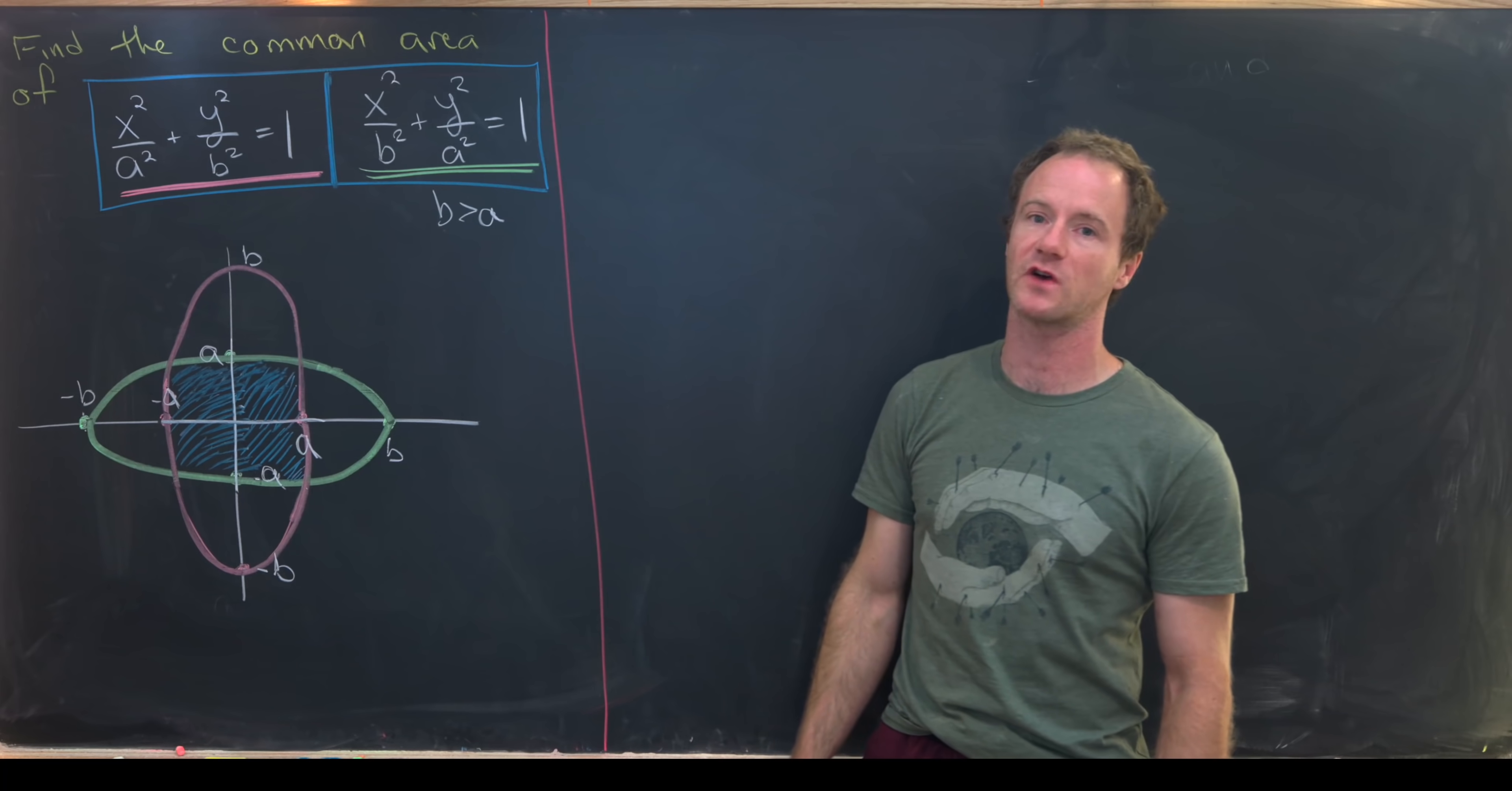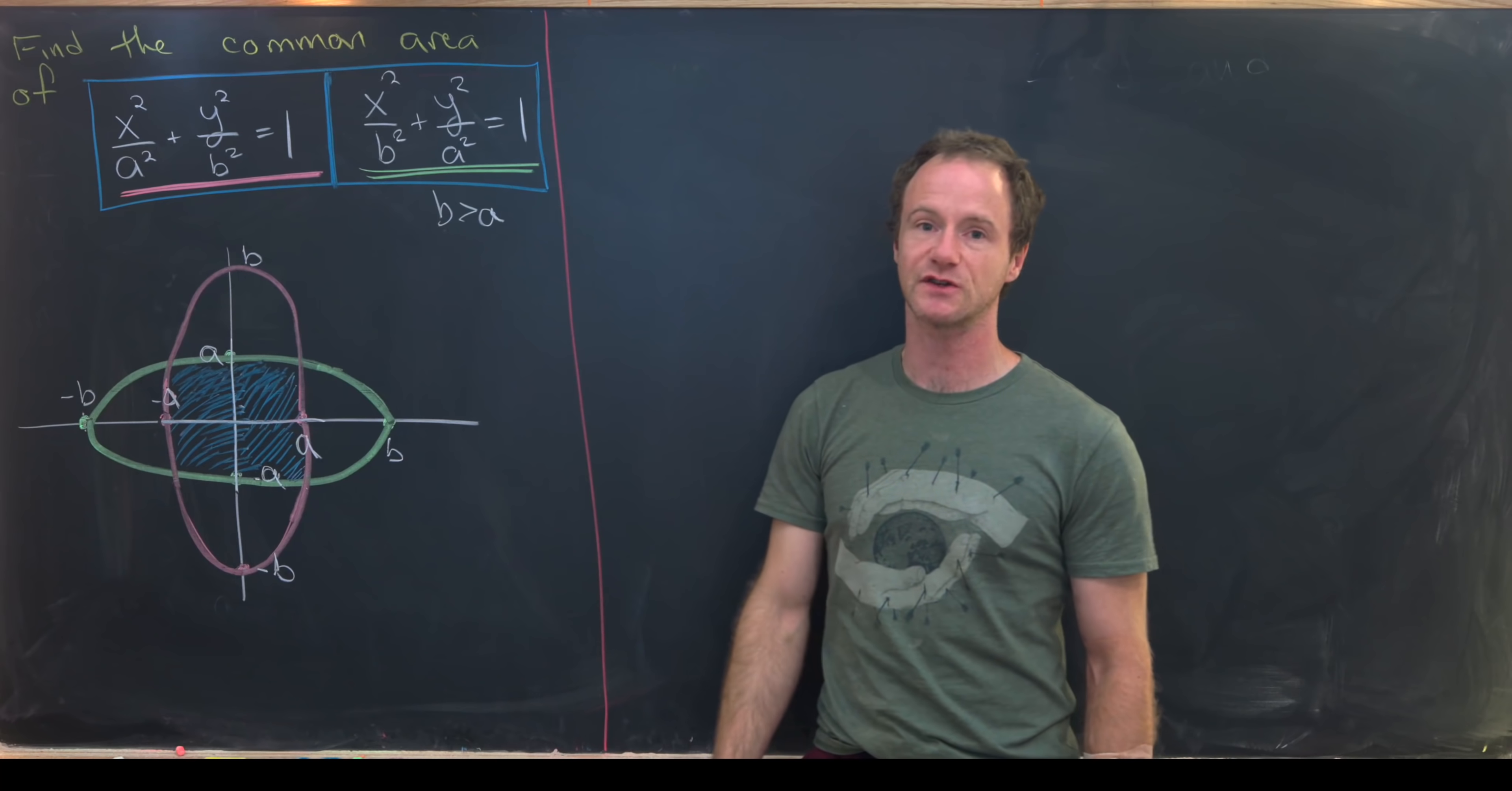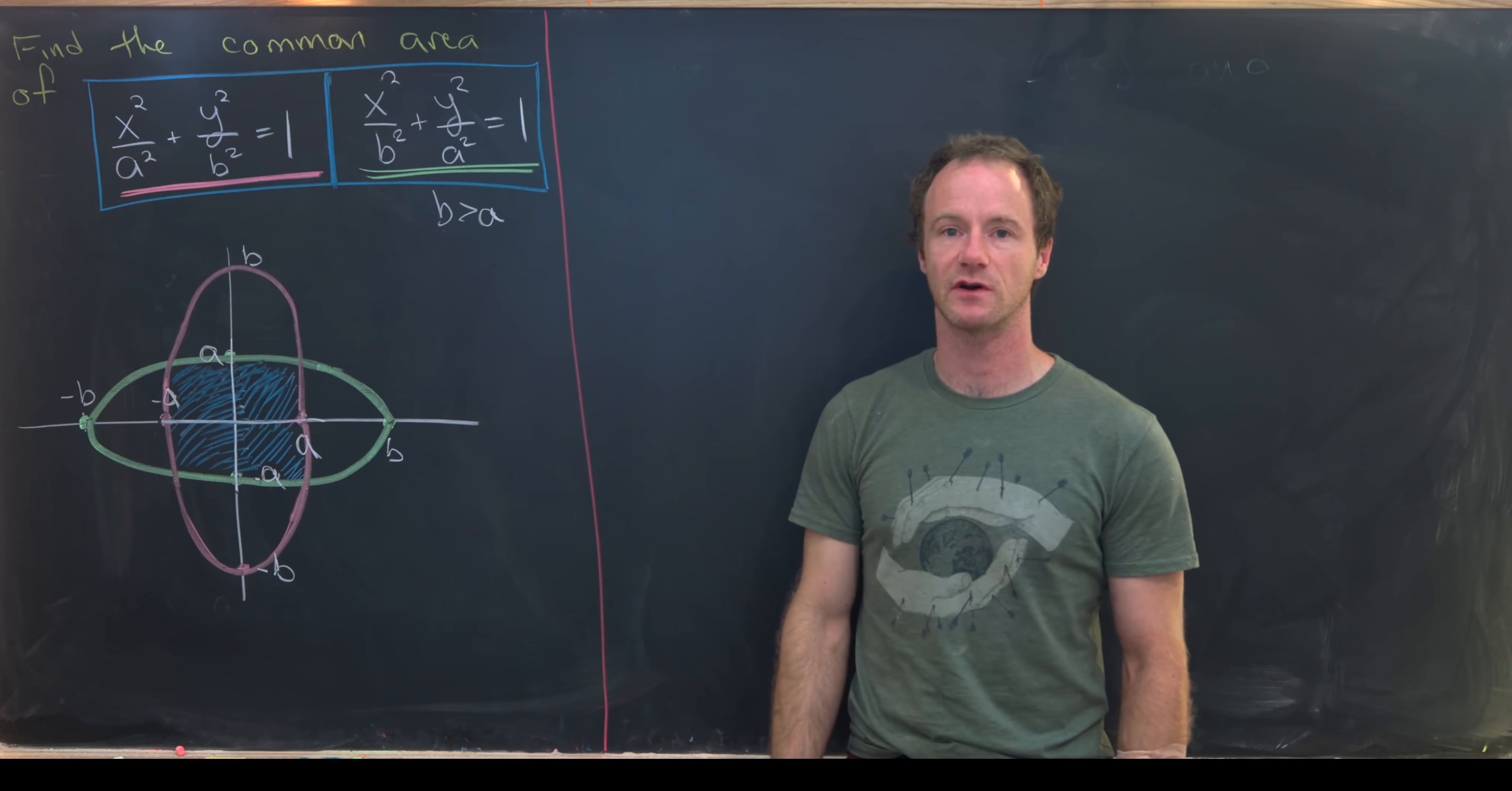We've got x squared over a squared plus y squared over b squared equals 1. I've underlined that in pink and drawn it in pink on this coordinate plane. Notice since we've got x squared over a squared, its x-intercepts are a and minus a. And since y squared is over b squared, its y-intercepts are b and minus b.